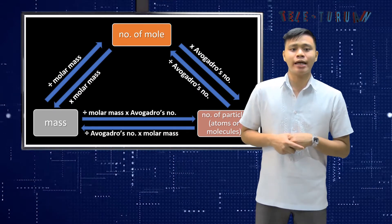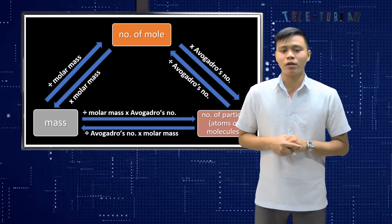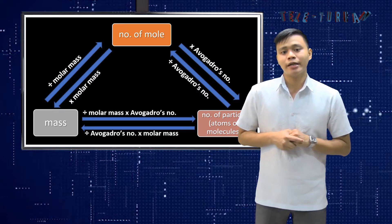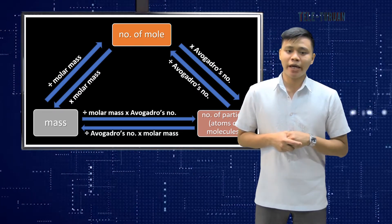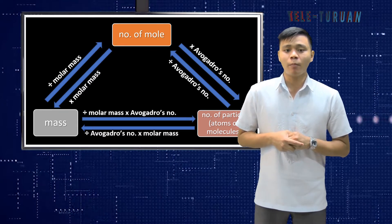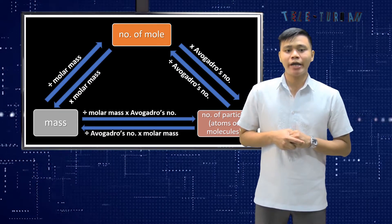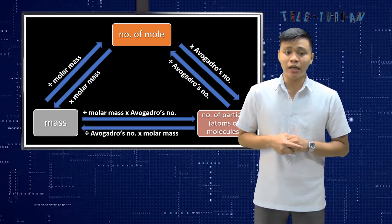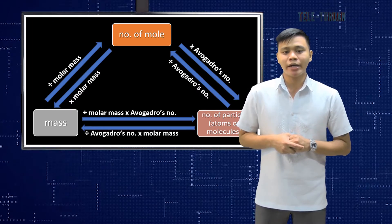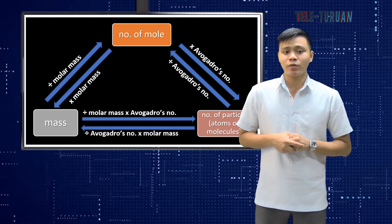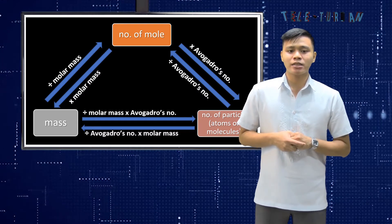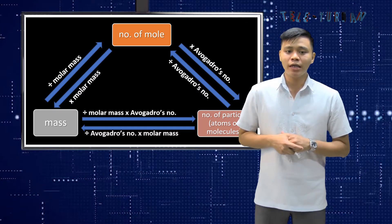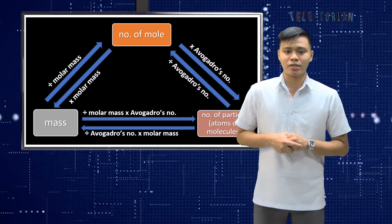This diagram shows that number of moles times Avogadro's number is equal to the number of particles, which can be atoms or molecules. Number of particles divided by Avogadro's number is equal to the number of moles. Mass divided by molar mass times Avogadro's number is equal to the number of particles. Number of particles divided by Avogadro's number times molar mass is equal to its mass. Mass divided by molar mass is equal to the number of moles, and number of moles times molar mass is equal to the mass of the substance.